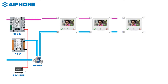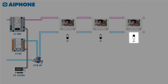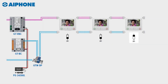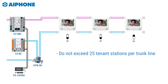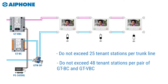The important thing to know is you cannot exceed 25 apartments on an individual trunk line. The last unit on every trunk line needs to have the video terminated — do this by flipping the dip switch on the back of the unit from AB to the A position. You have five remaining outputs on your GT VBC and can continue adding trunk lines as needed. Remember: do not exceed 25 apartments per trunk line and do not exceed 48 apartments per pair of GTBC and VBCs.